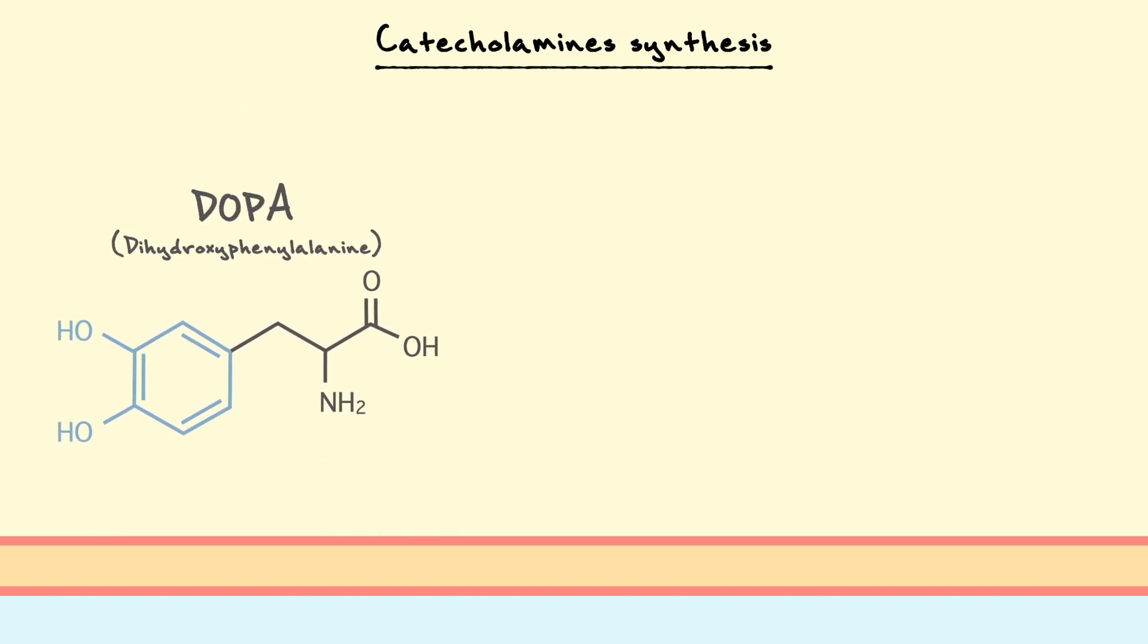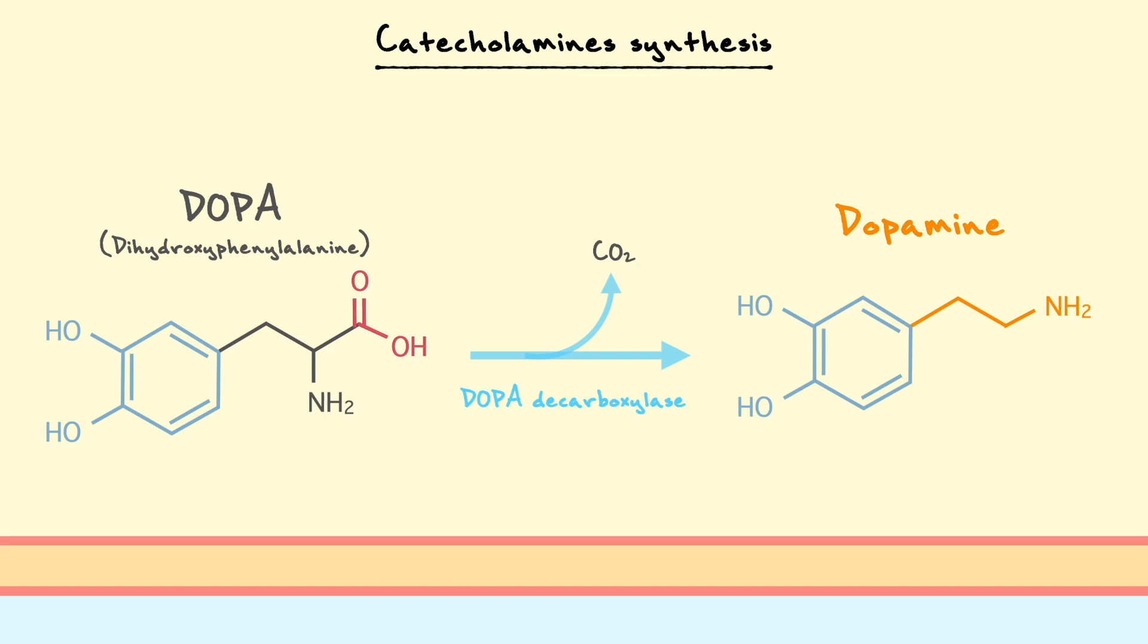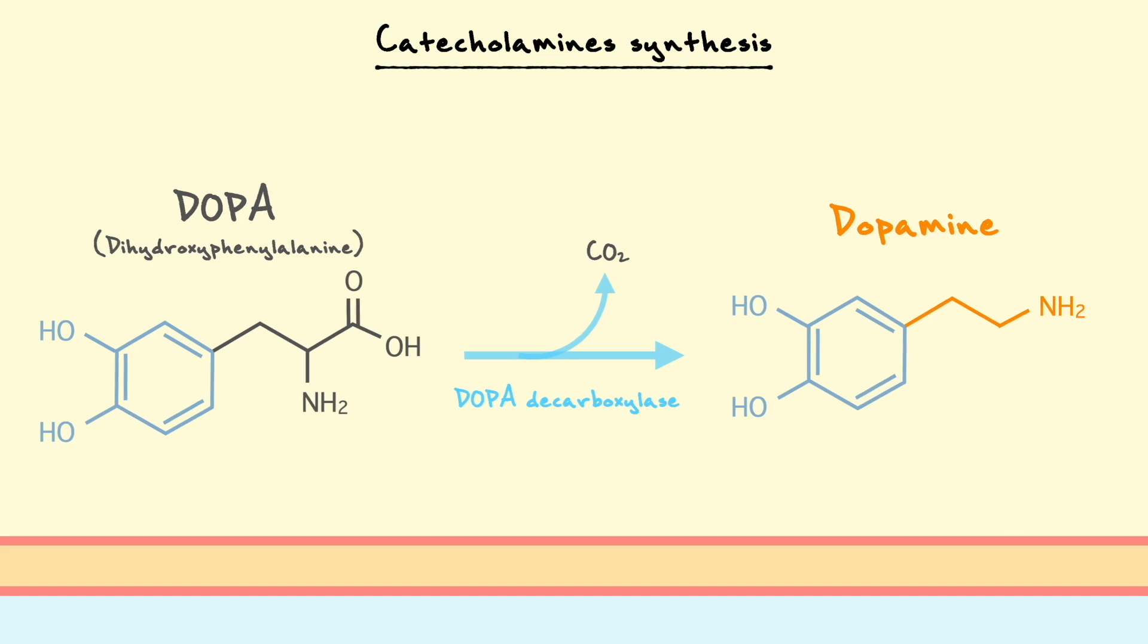In the second step, DOPA gets decarboxylated, or in other words, loses the carboxyl group here in red, and this reaction is catalyzed by the enzyme L-DOPA decarboxylase. The reaction yields dopamine and carbon dioxide.